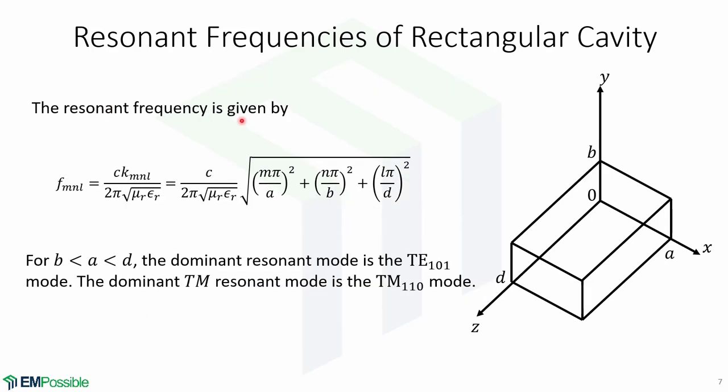Now the resonant frequency is given by this expression: fmnl equals c kmnl over 2π times the square root of μr times εr, which is equal by this expression. For a cavity where B is less than A and A less than D, the dominant resonant mode is the TE10l mode.